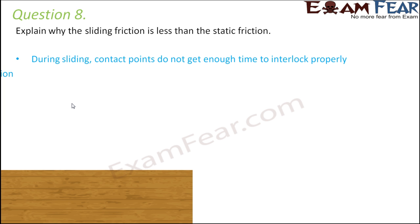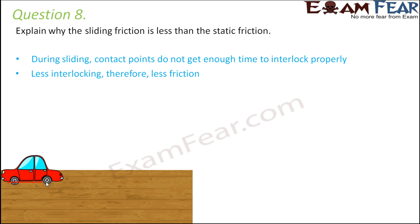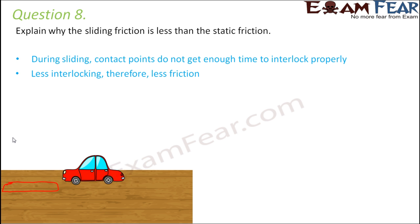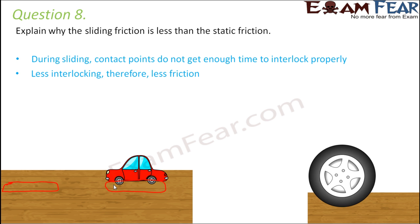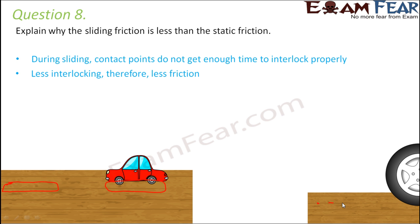When an object is at rest, there is sufficient interlocking between the two surfaces, so they are well interlocked and friction is more — that is static friction. But as soon as the object starts moving, the two surfaces do not get enough time for proper interlocking. The object keeps changing position, so there is less interlocking and therefore less friction. That is why sliding friction is lesser than static friction.